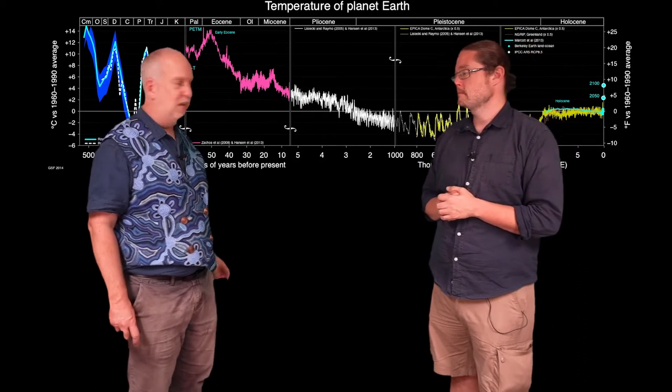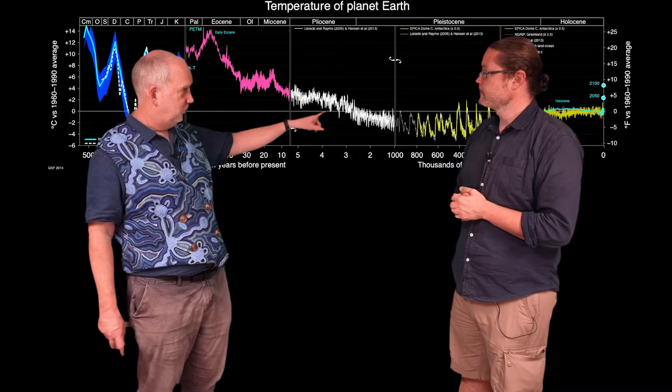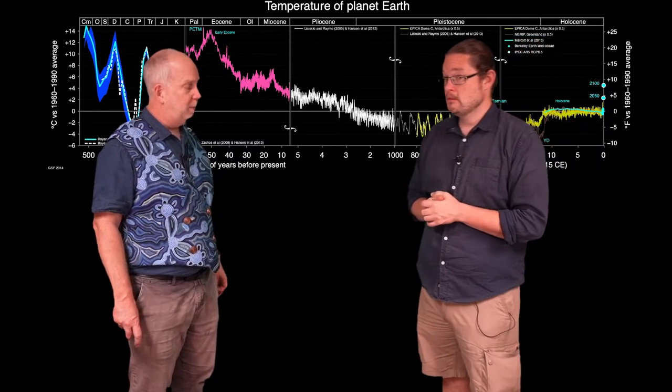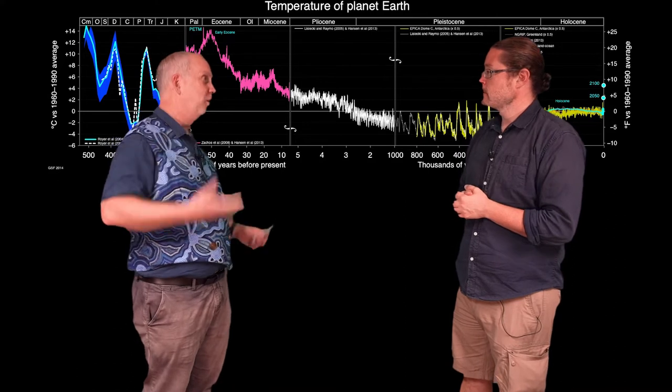So here we're looking back to hundreds of millions of years, and you see the Earth's had hot periods and cold periods. But in fact, a lot of the history of the Earth, the Earth was on average maybe 16 degrees warmer than it is now. And this is almost certainly like when the dinosaurs roamed the Earth, we believe there were no polar ice caps.